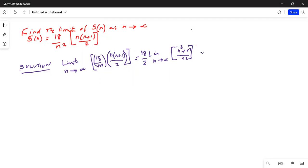Which can be further written as 18 over 2, and limit N tends to infinity, 1 plus N over N squared.